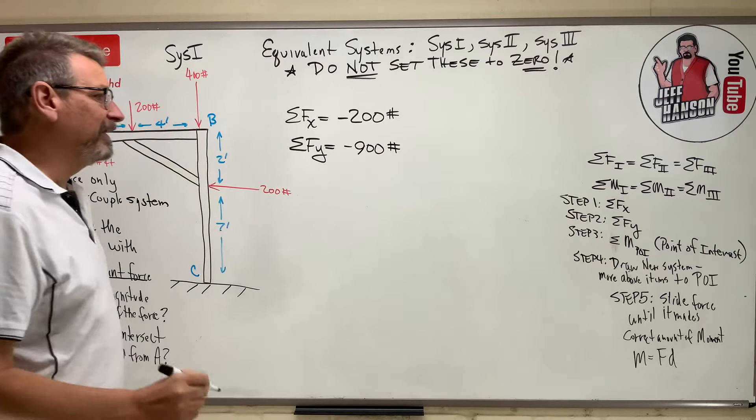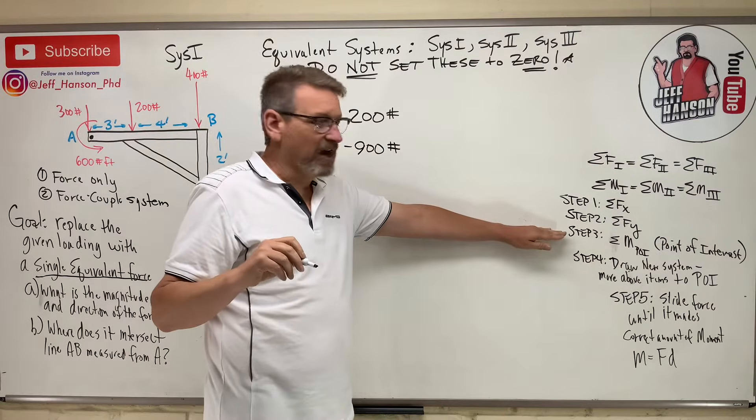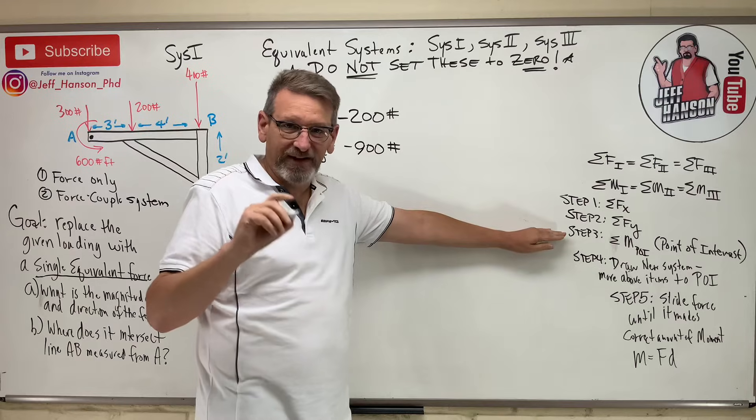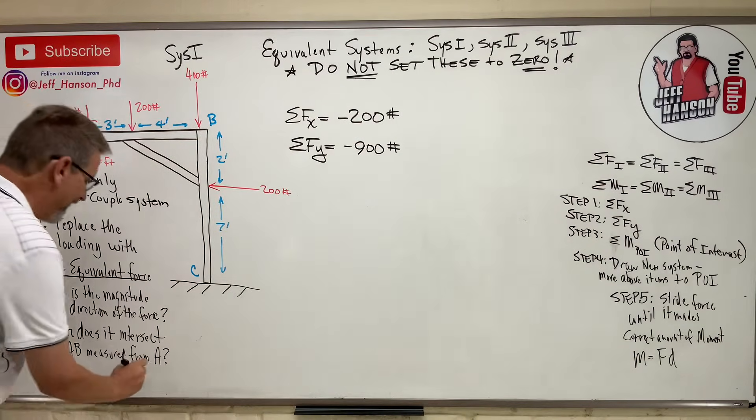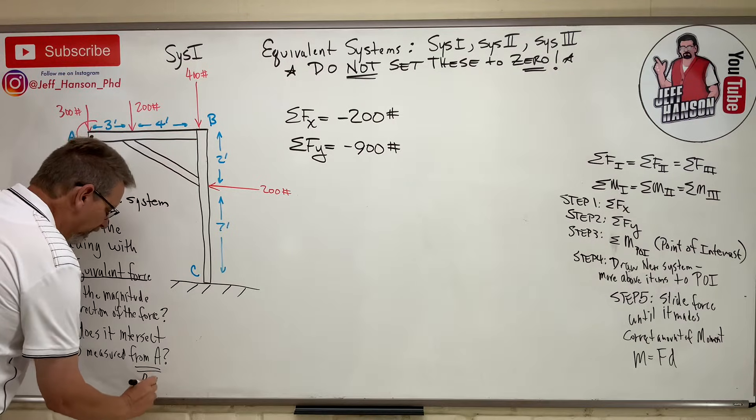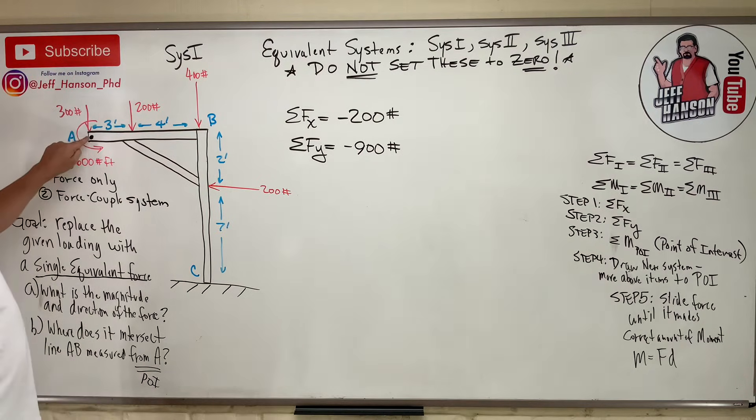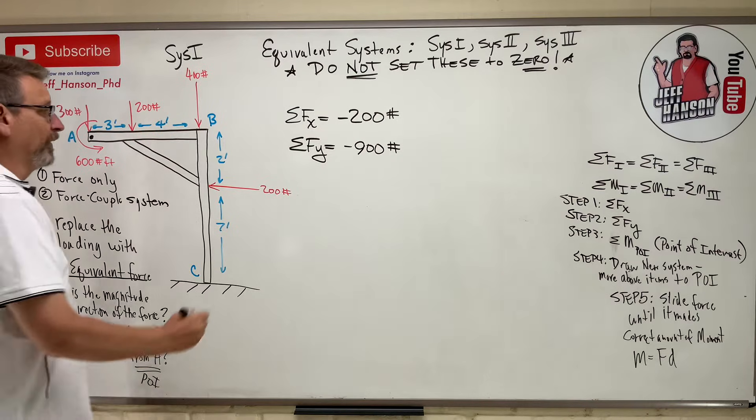And then step 3, sum the moments about the point of interest. And the point of interest in this is measured from A. So, that's my poi right there, point A, which is here. So, take the moment about point A.